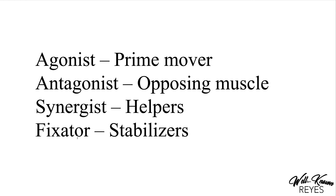Synergists are helpers — they assist the prime mover. A fixator is a stabilizer; fixators stabilize the proximal joint so the distal limb can achieve effective contraction. We will go over these more in depth and I'll give you a few examples so you can better understand them.